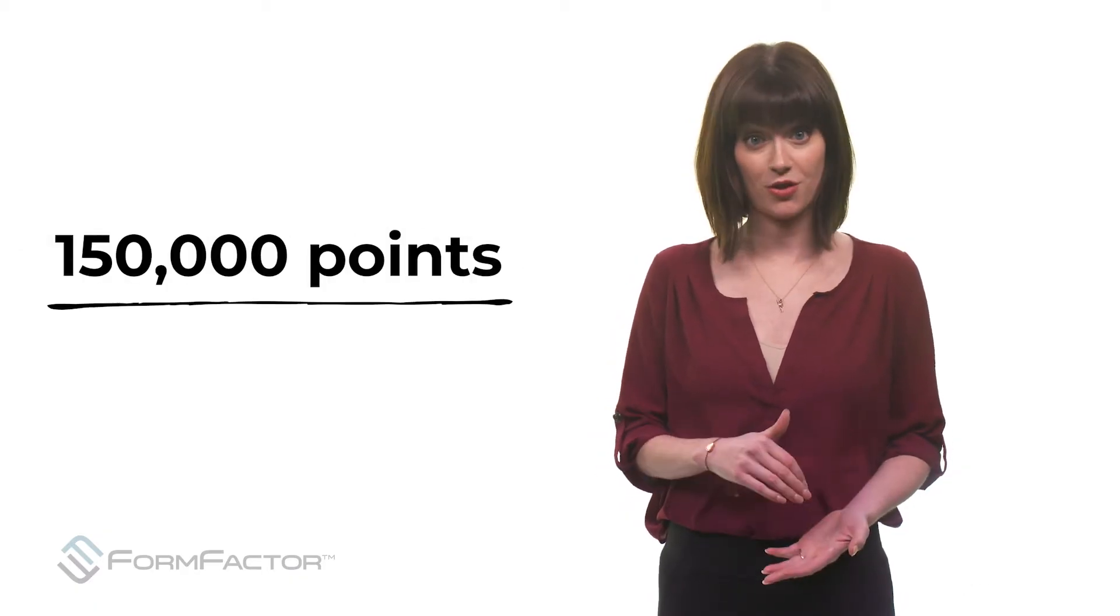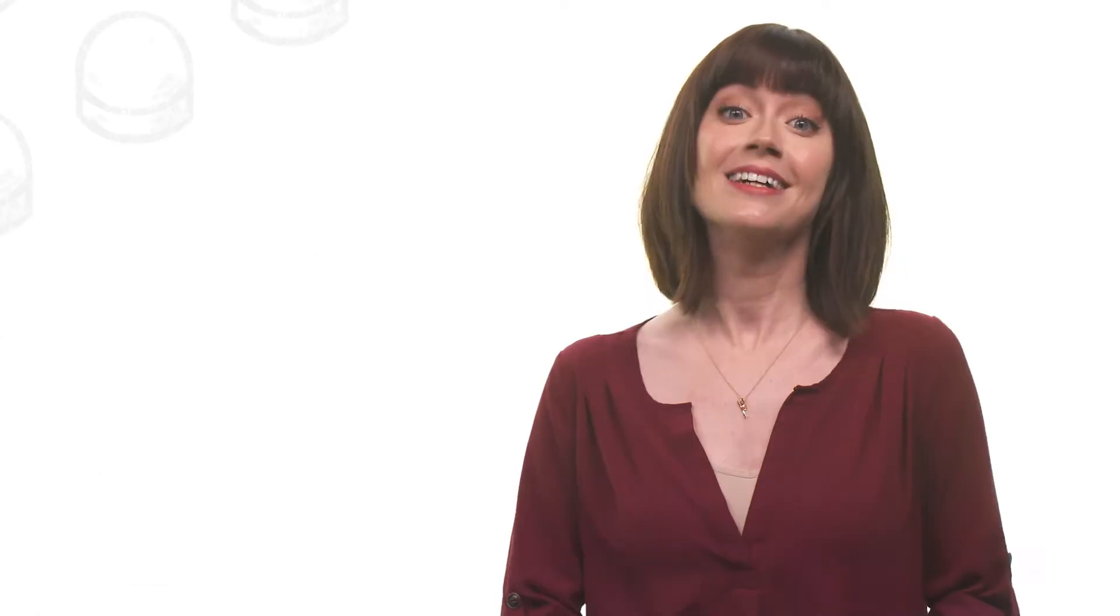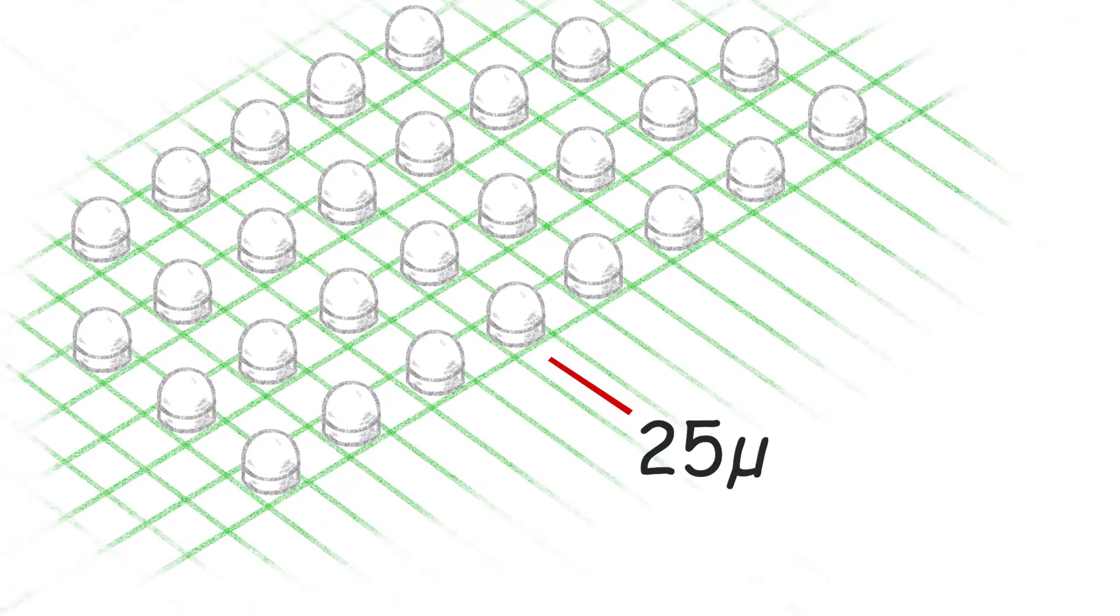Here's why. To ensure proper measurements, the test gear makes contact with as many as 150,000 points on the surface of each wafer. These points can include fragile features such as micro bumps, which can be as small as 25 microns or below, about half the diameter of a single hair.